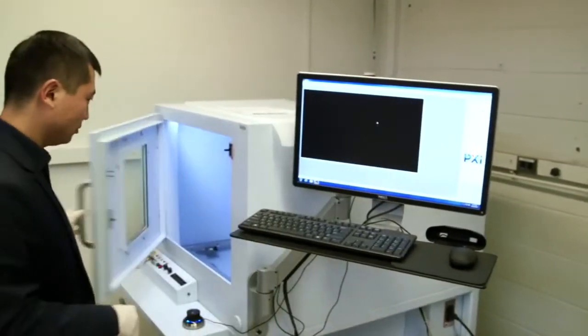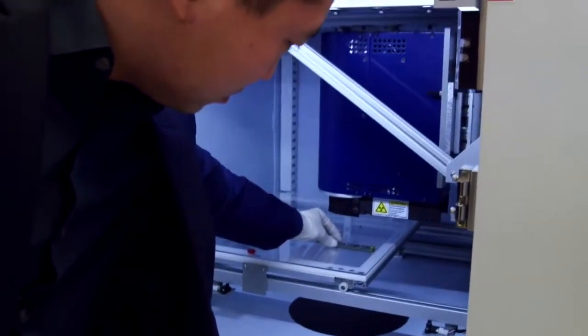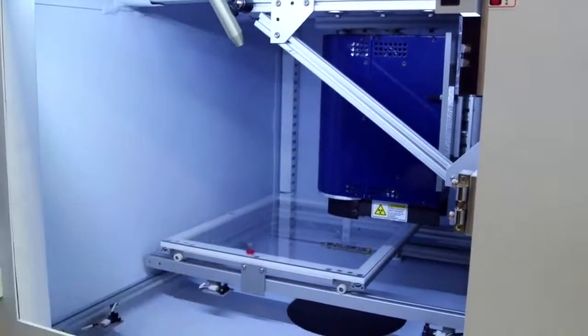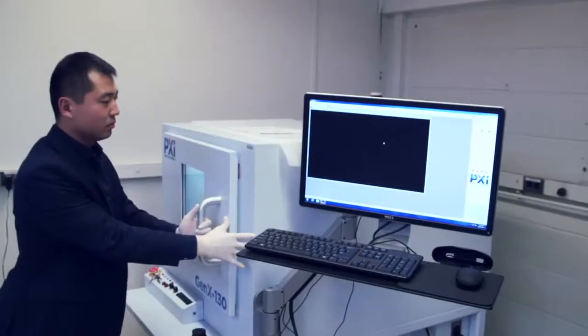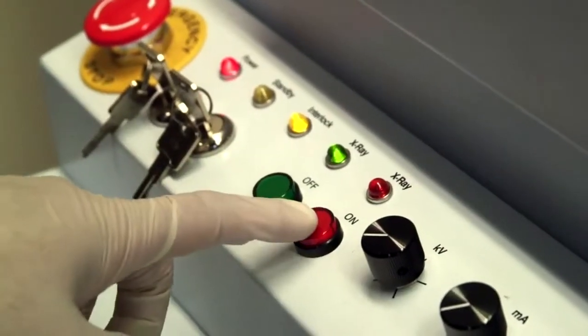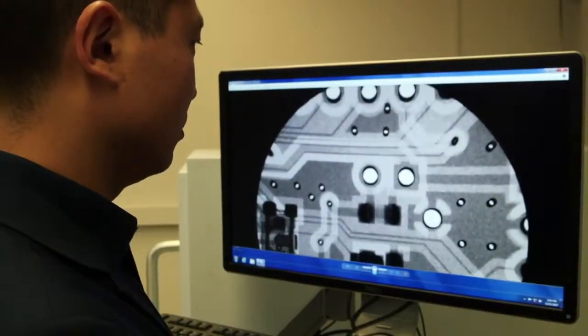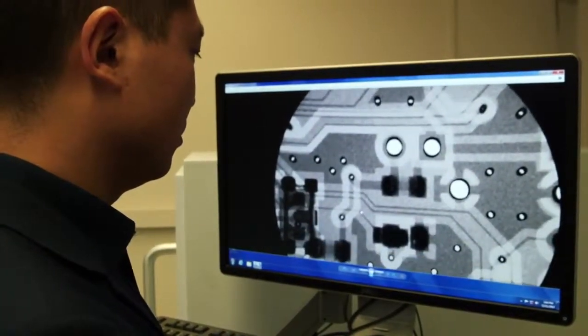Finally, to make sure there are no voids or cavities in the circuit board and wire bonds, we inspect them using X-ray imaging. Different materials require different levels of energy to penetrate the chip and form images. So, adjust the energy dose accordingly.